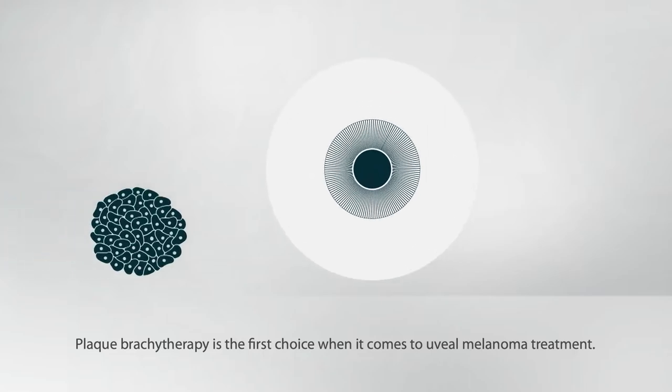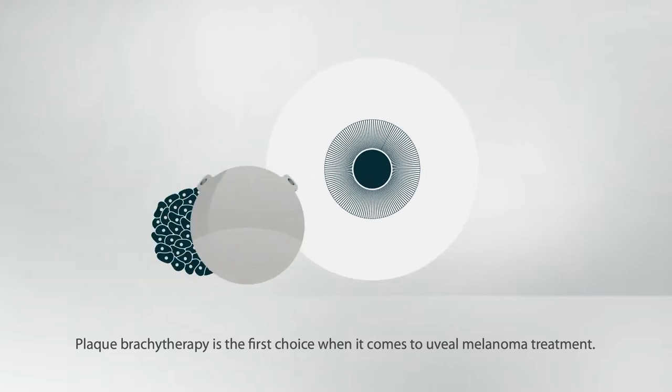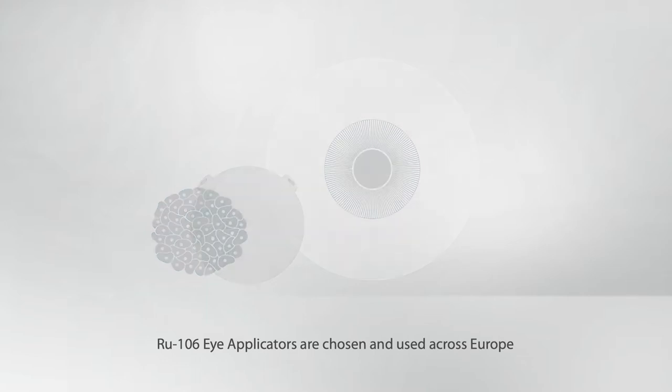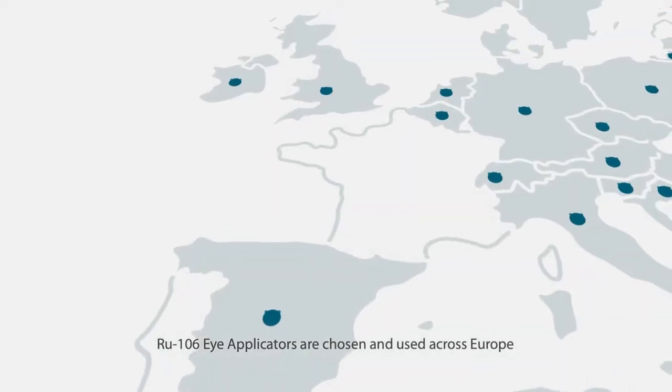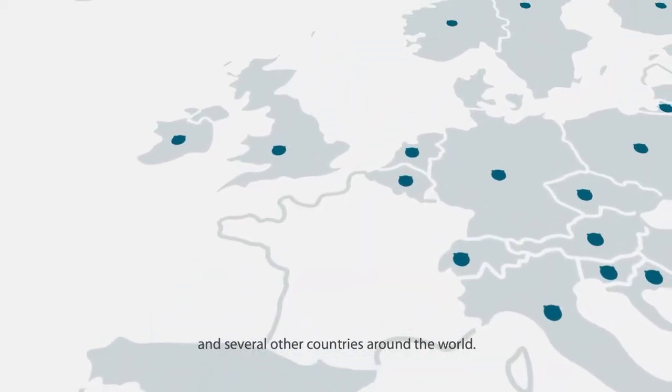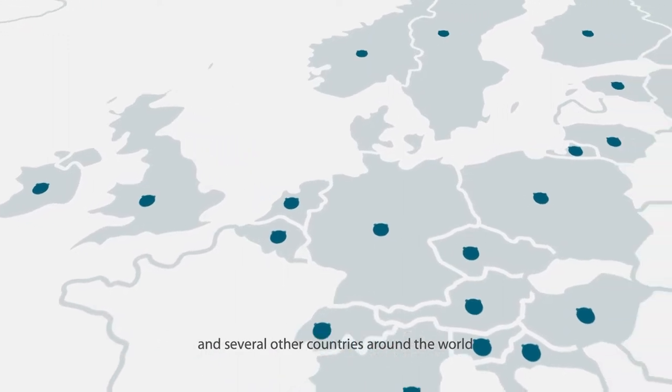Plaque brachytherapy is the first choice when it comes to uveal melanoma treatment. Ruthenium 106 eye applicators are chosen and used across Europe and several other countries around the world.